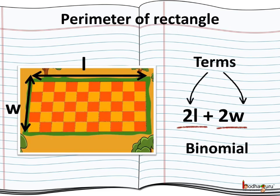Expression with two terms are called binomials. Bi means 2. For example, the perimeter of this rectangle is 2 multiplied by length plus 2 multiplied by width. 2L is one term and 2W is the second term, where L and W are the length and the width of this rectangle.